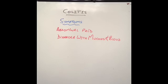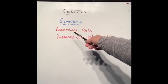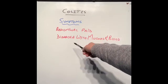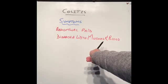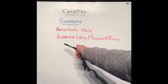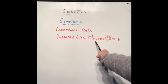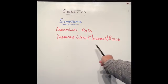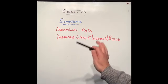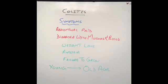The two main symptoms of ulcerative colitis are abdominal pain and bloody diarrhea. Bloody diarrhea means loose, runny motions which contain mucus and blood. These are the main symptoms of ulcerative colitis.